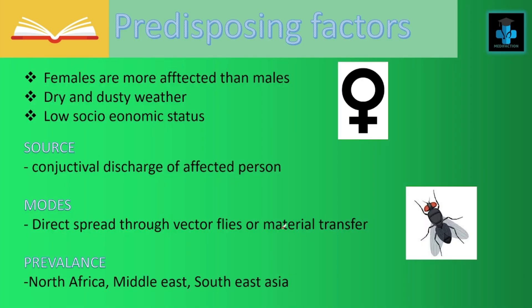Now let's see the predisposing factors for trachoma. They are more common in females than men, more prone in dry and dusty weather, and also more prone among those of low socioeconomic status.